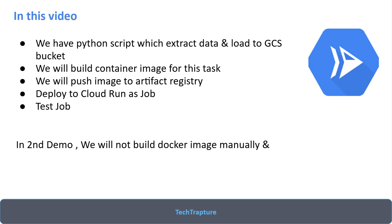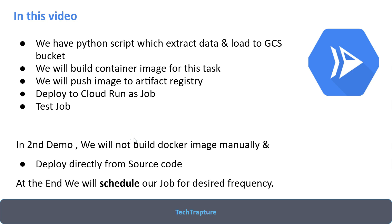We'll also have a second demo where instead of building a Docker image manually, we'll deploy directly from the source code. We'll just execute a command and it will automatically create a repository, build a Docker image, and deploy it as a job. The second step is to schedule this job on a particular frequency — suppose we want this data extraction to happen every one hour. Let's jump into the demo now.